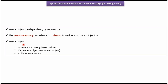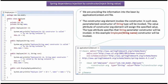We can inject primitive values, string-based values, dependent objects, and collection values, etc. Here I have defined the class Employee. It has two properties: ID and name, and it has three constructors. The first constructor accepts ID, the second accepts name, and the third accepts both ID and name. It also has a display employee details method.